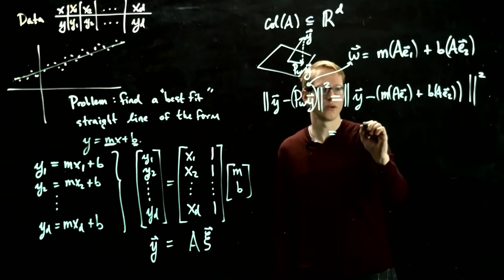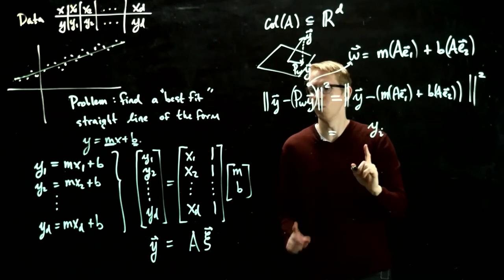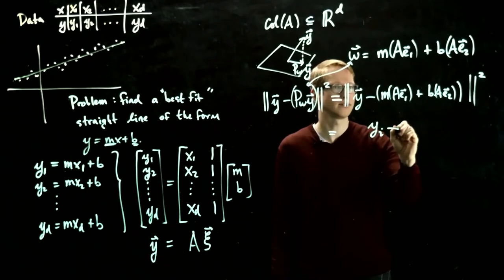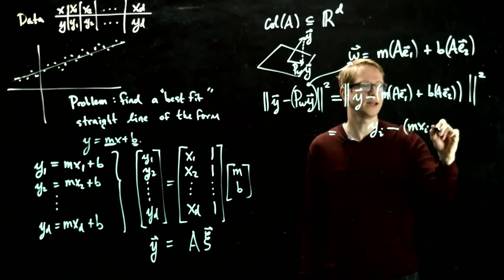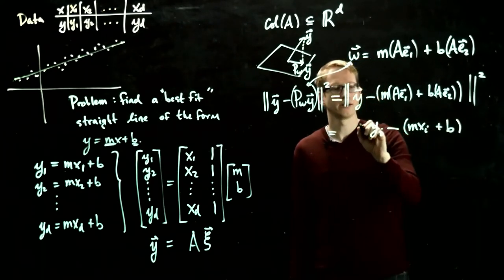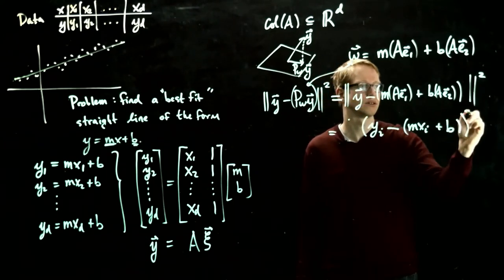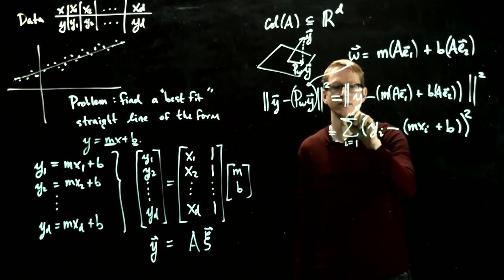Then this is the sum. So first let's take an arbitrary ith component here. It's yi minus m times xi plus b. And that's it. And then we take the sum of these squares, because that's what this means, and we sum over all i from 1 to d.